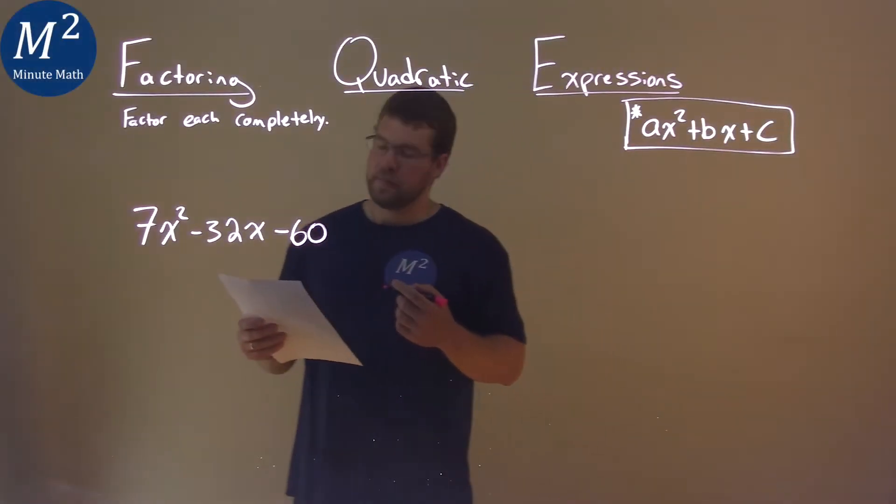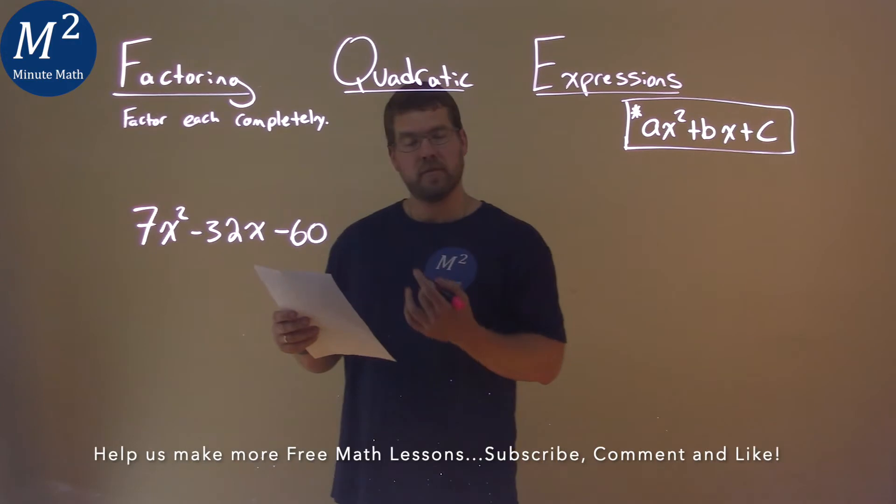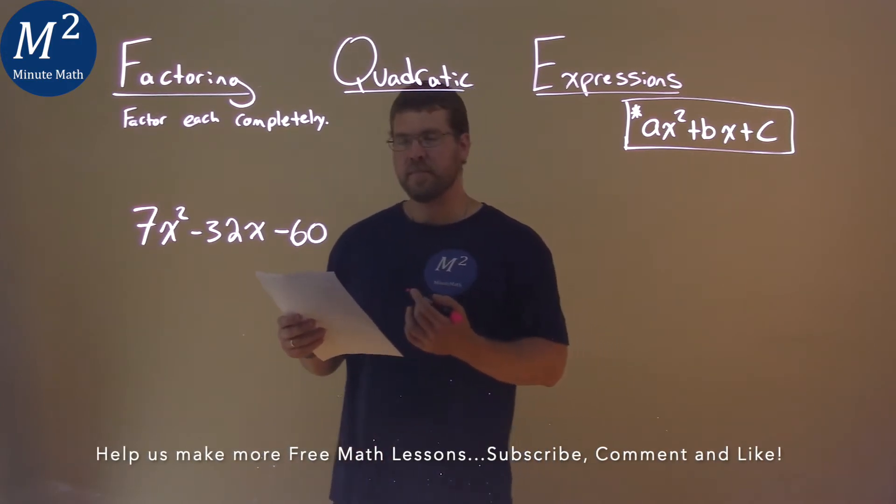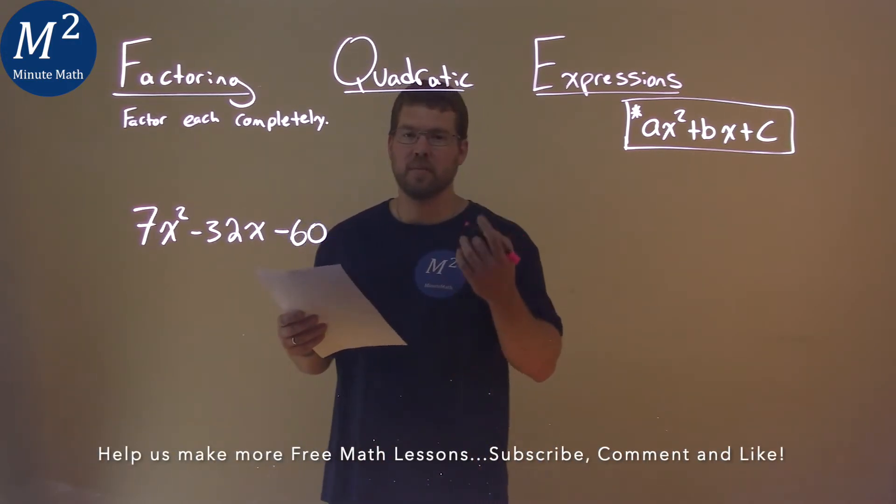We're given this problem right here: 7x squared minus 32x minus 60, and we want to factor this completely.